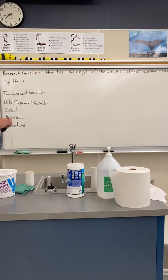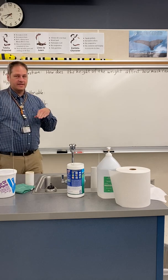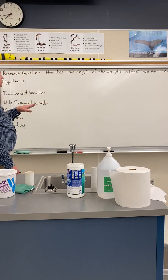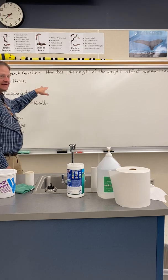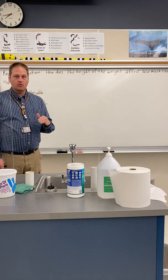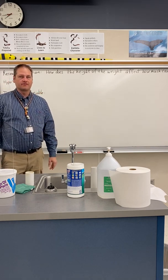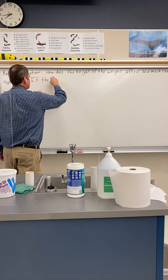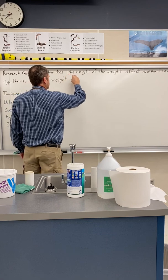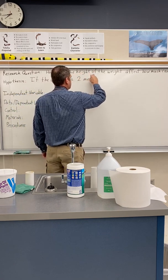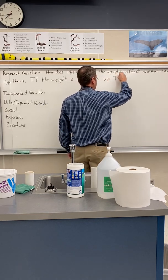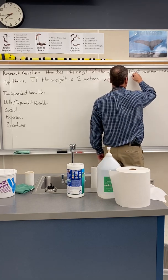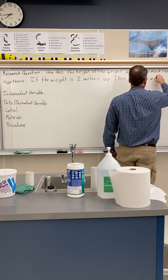For our hypothesis, we first need to think about the control. I'm going to say the control is the can not being crushed. Now in the hypothesis, I'm writing what I think will happen with one of the tests — either two meters high or one meter high — and how that will differ from the control. If the weight is two meters up, then the can will be crushed more.